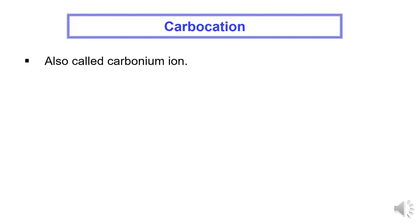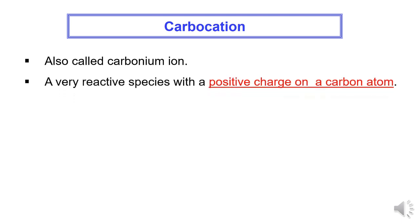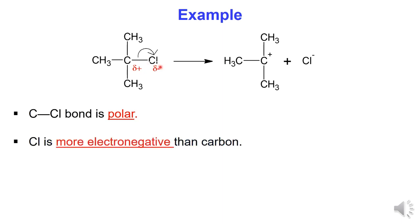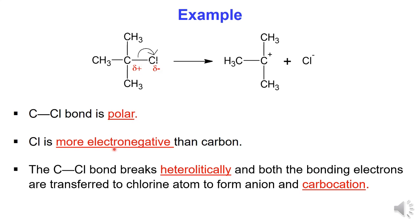Carbocation, also called carbonium ion, is a very reactive species with a positive charge on a carbon atom. It is formed in heterolytic cleavage. For example, the bond between carbon and chlorine is a polar bond. Chlorine is more electronegative than carbon, so the polar bond is broken heterolytically and both bonding electrons are transferred to chlorine atom to form chloride ion (Cl⁻) and a carbocation with a positive charge on the carbon atom.